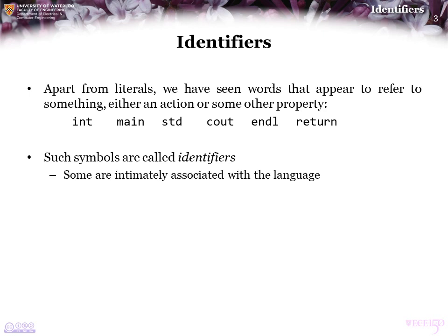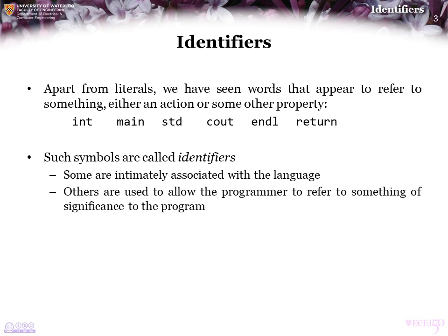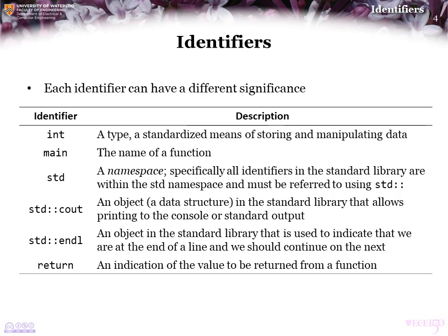Some of them, such as int and return, are intimately associated with the C++ programming language. For all of the others, they are there to allow the programmer to refer to something of significance to the program. Each of these identifiers has a different significance — we'll describe this now and get into more detail in future topics. Int is just a type, and it's a way of representing an integer.